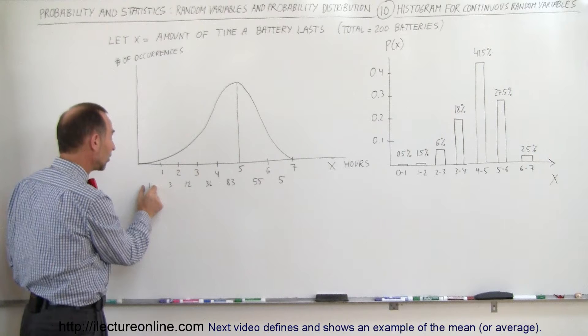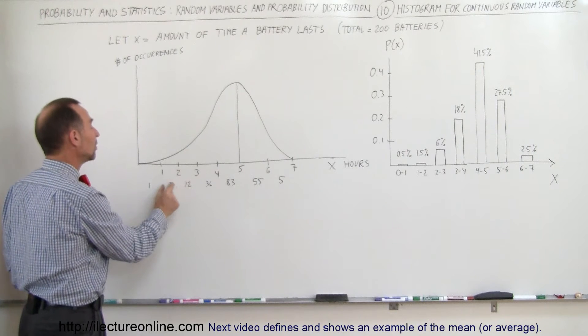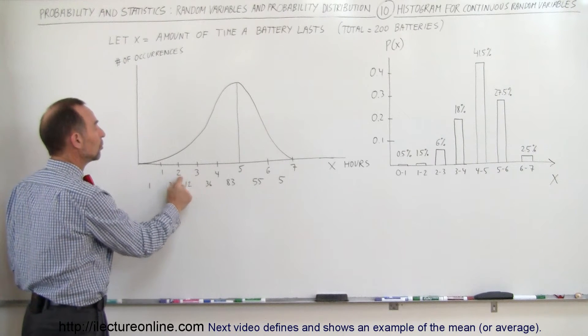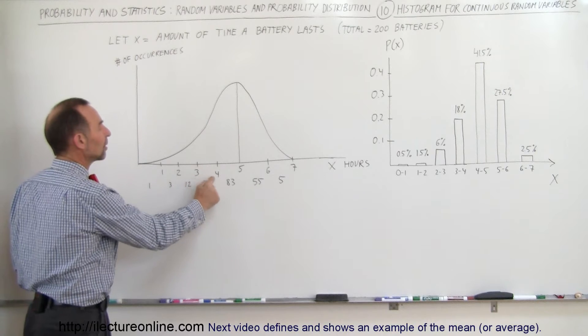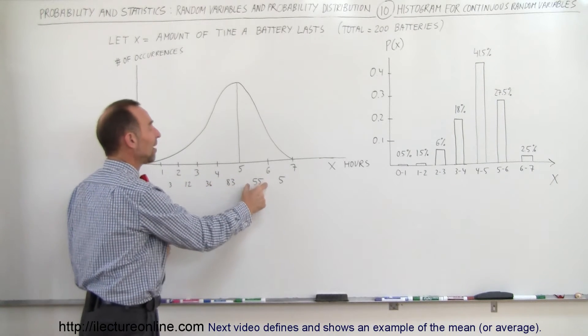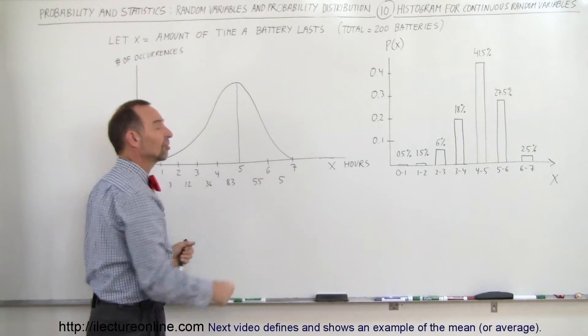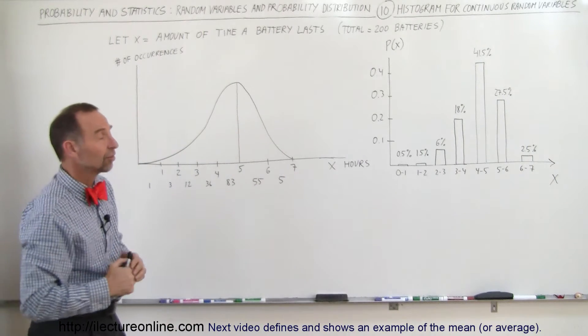Here you can see there's one that lasted between zero and one hour, three between one and two, twelve between two and three, thirty-six between three and four, eighty-three between four and five, fifty-five between five and six, five between six and seven, and none lasted more than seven hours.